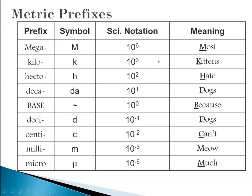So how do we keep these straight? A good way to do that is to come up with some sort of a mnemonic device. Most of us in the chemistry department use this particular mnemonic device which a student came up with several years ago, like maybe 15 years ago. And the saying is most kittens hate dogs because dogs can't meow much. So mega, kilo, hecto, deca, base, deci, centi, milli, micro.